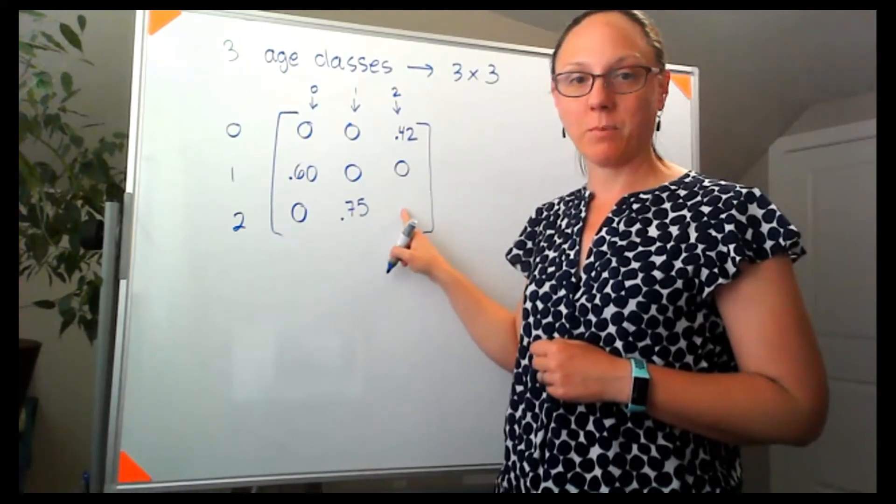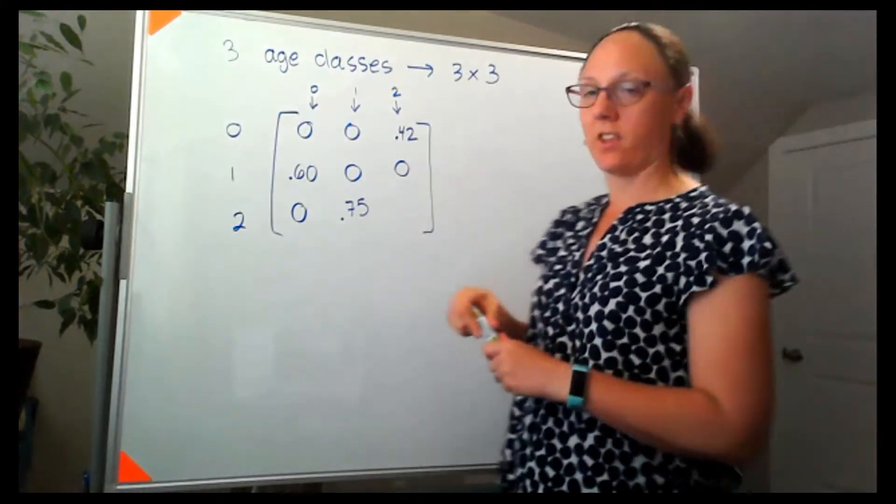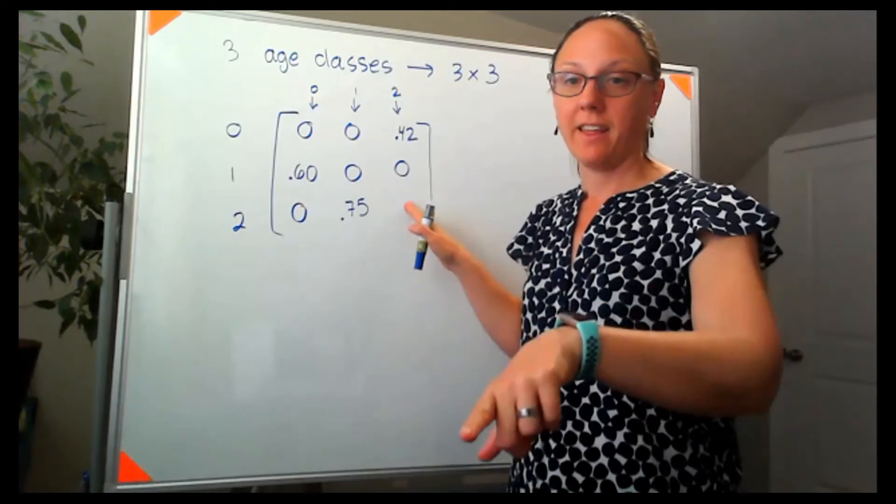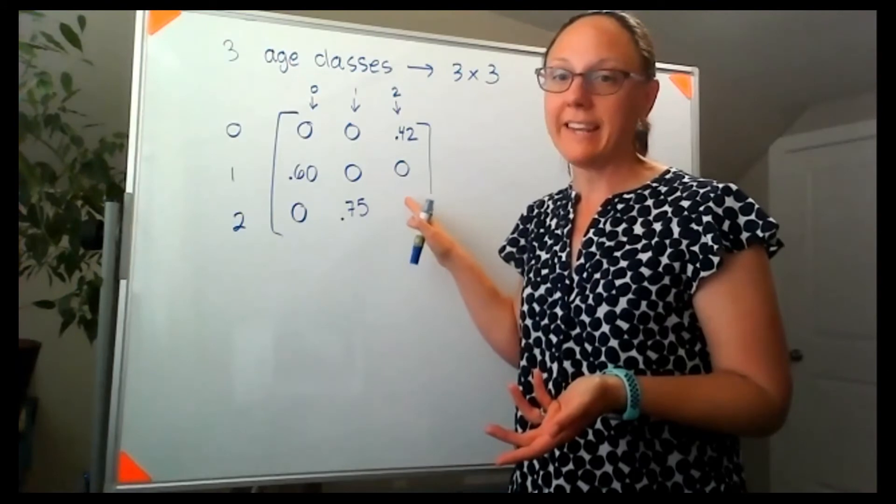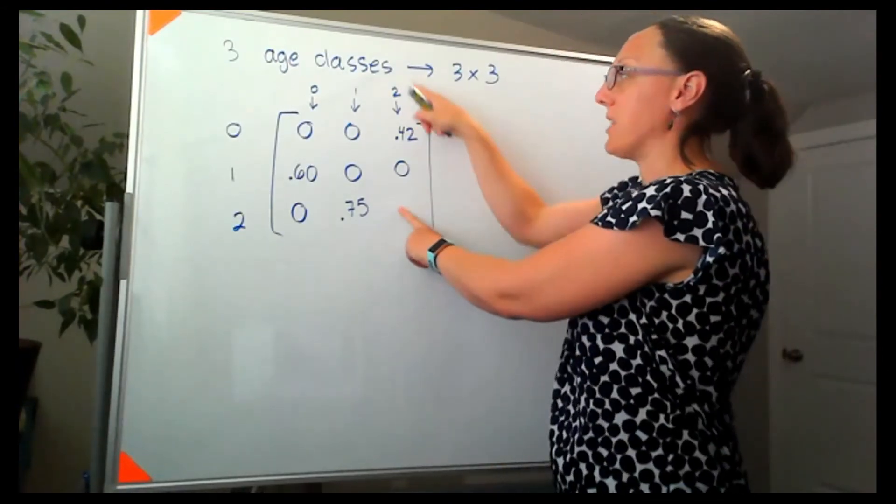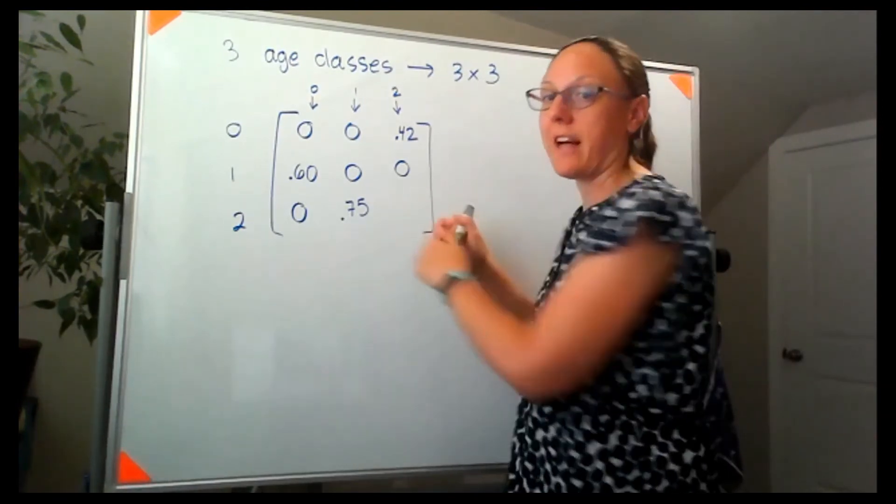And then this last piece here, it's often 0 for a Leslie matrix. But it doesn't have to be. So in this case, we said that 95% of females in age class 2 survive another year. So this is saying my age class 2 females are feeding into my age class 2. So there was a 0.95.